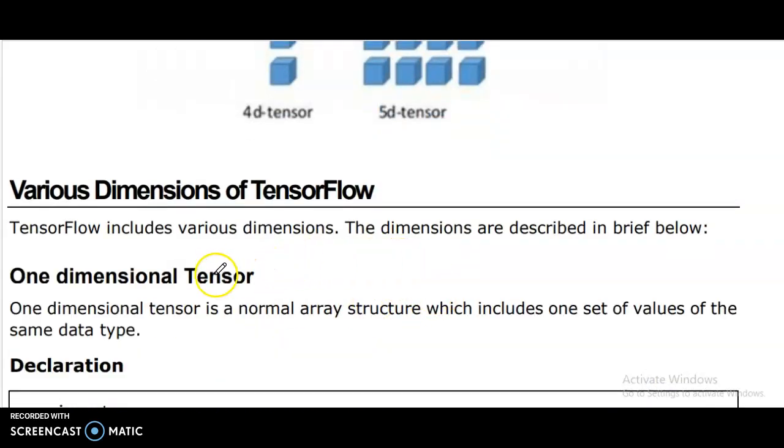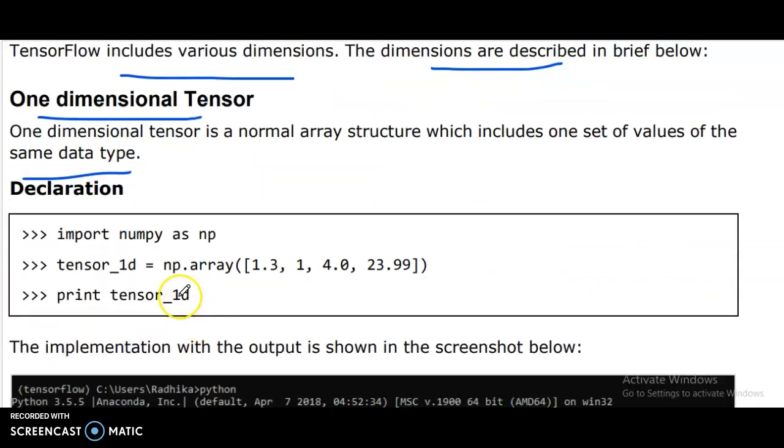Various dimensions of TensorFlow. One dimensional tensor is a normal array structure which includes one set of values of the same data type.